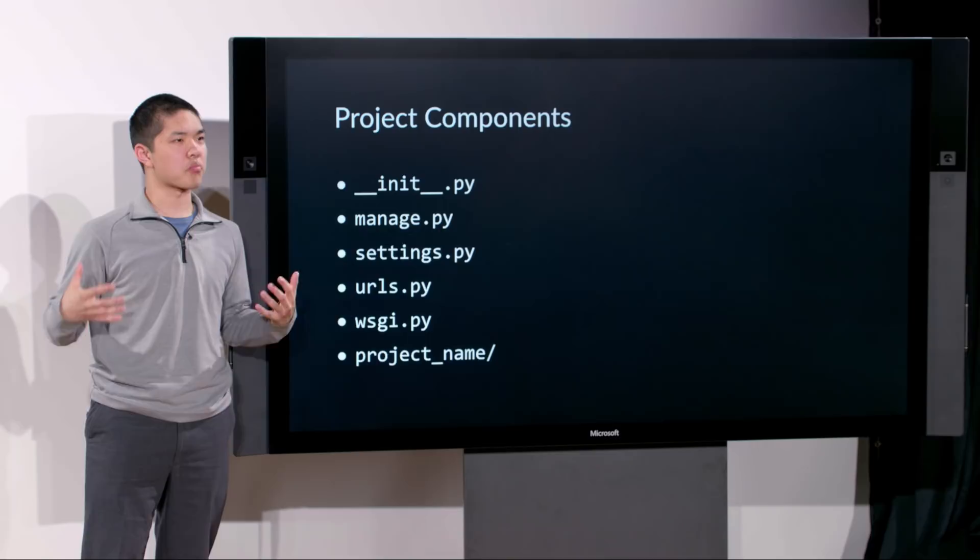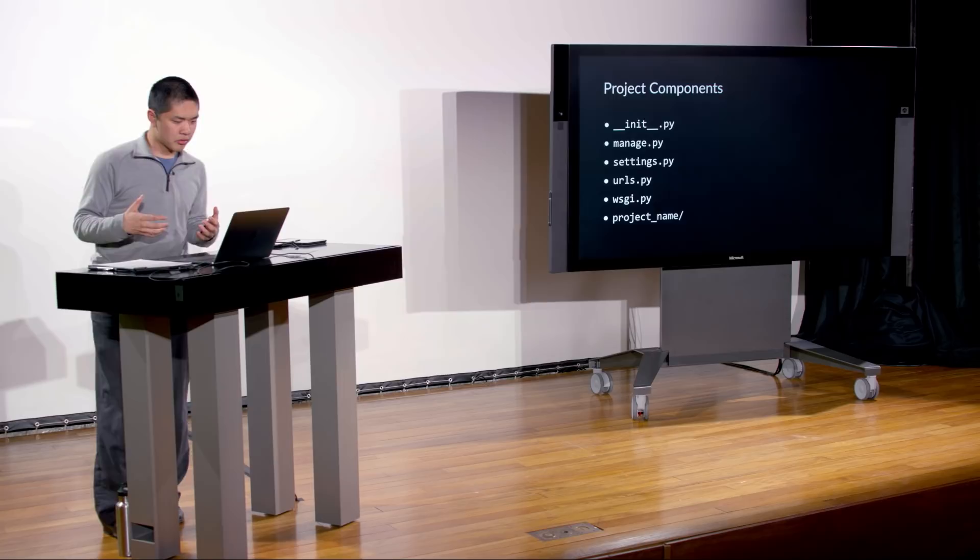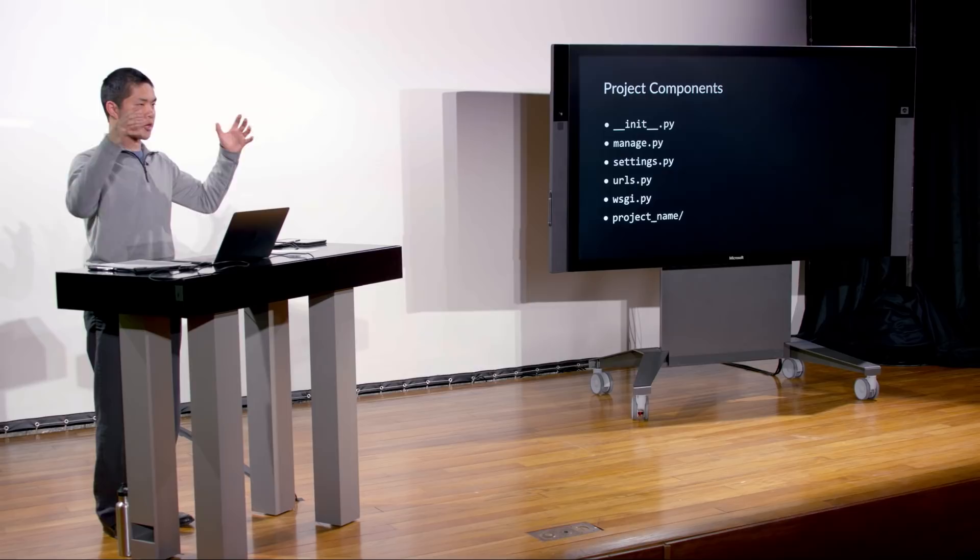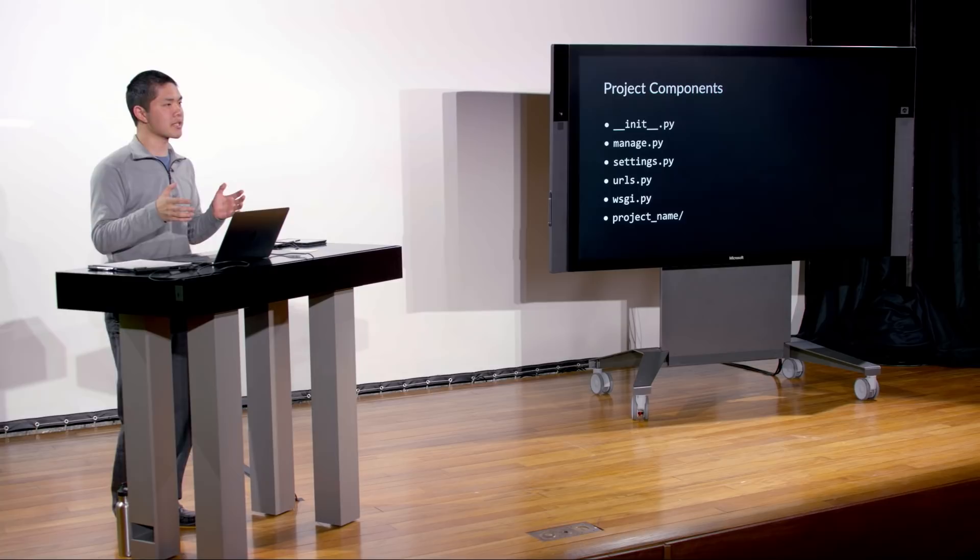The next step is to create what's called a Django application. A Django project is our big picture project containing all the files needed for our website, and it consists of one or more Django applications — or apps — where each app usually serves a particular purpose. Django has some built-in apps, and we're going to create an app within this project that will handle the routes we care about — for this simple project, a single app to take care of some basic routing, very similar to what Flask allowed us to do.